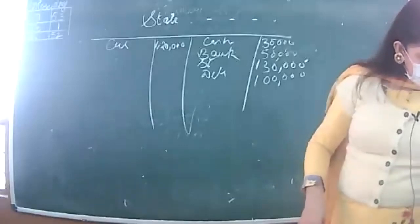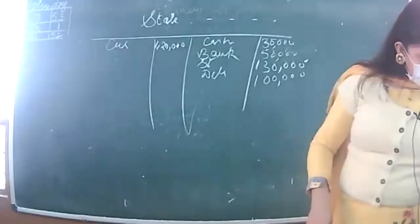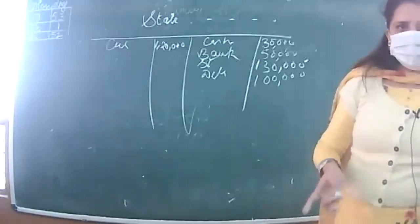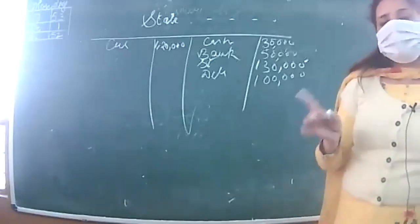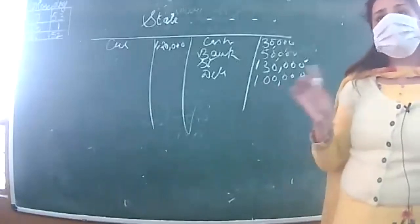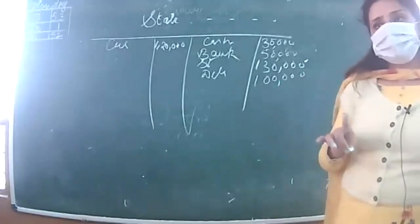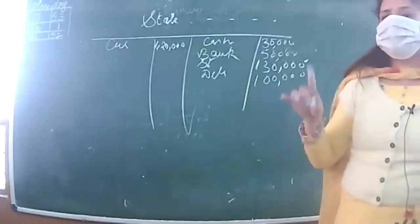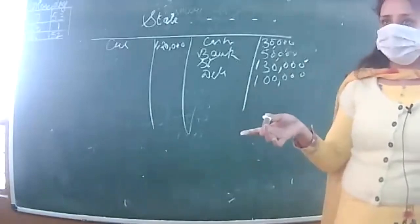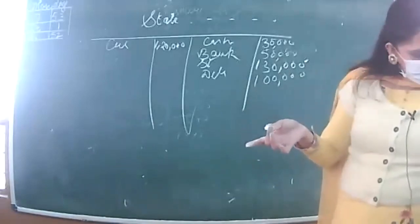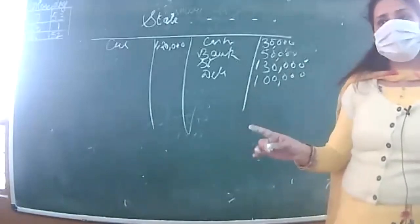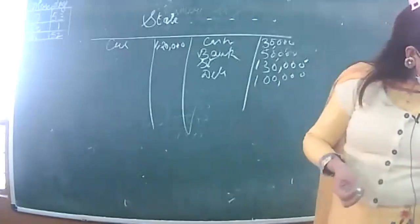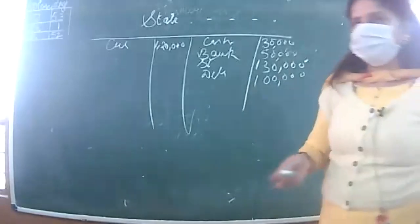The balance of furniture was 60,000. Furniture costing 25,000 was sold for 20,000 - meaning there is a loss on sale of furniture of 5,000, which will be an adjustment. Furniture remaining to be shown: 35,000. Bills receivable: no change, so BR remains the same.